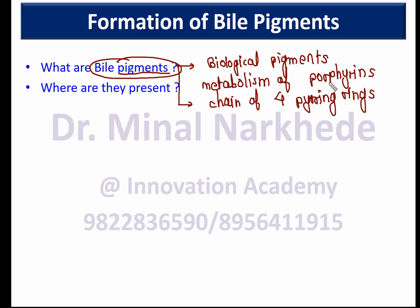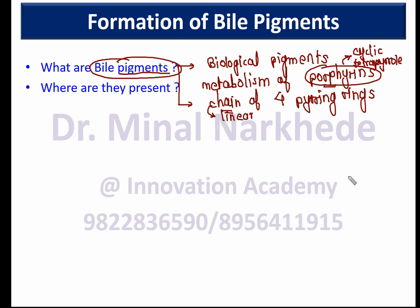The difference between porphyrins and bile pigments lies in their structure. When we say chain, that means they are present in linear form. Porphyrins, on the other hand, are present in the form of a cyclic tetrapyrrole structure — there are four pyrrole rings but they are arranged in a cyclic manner.